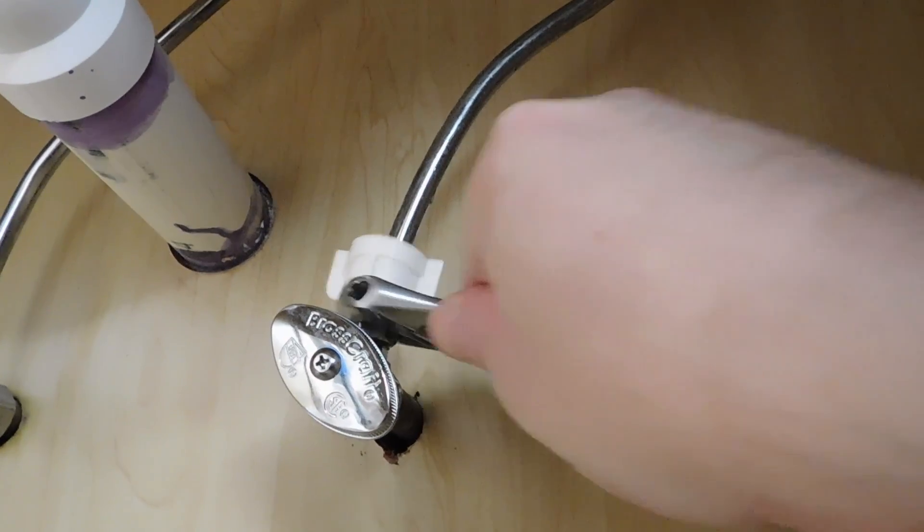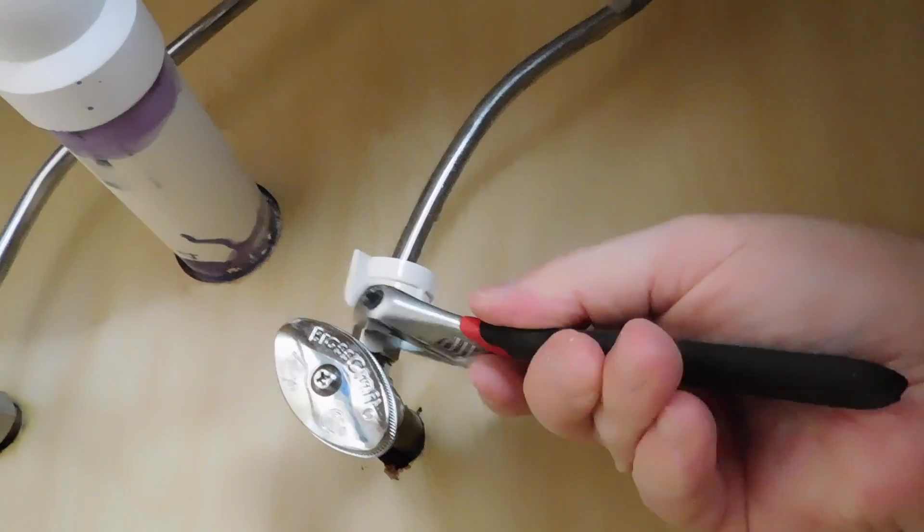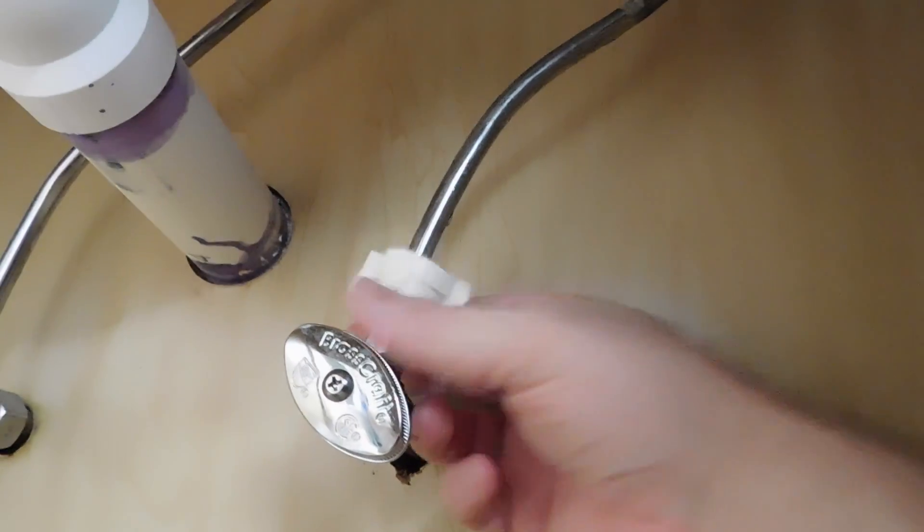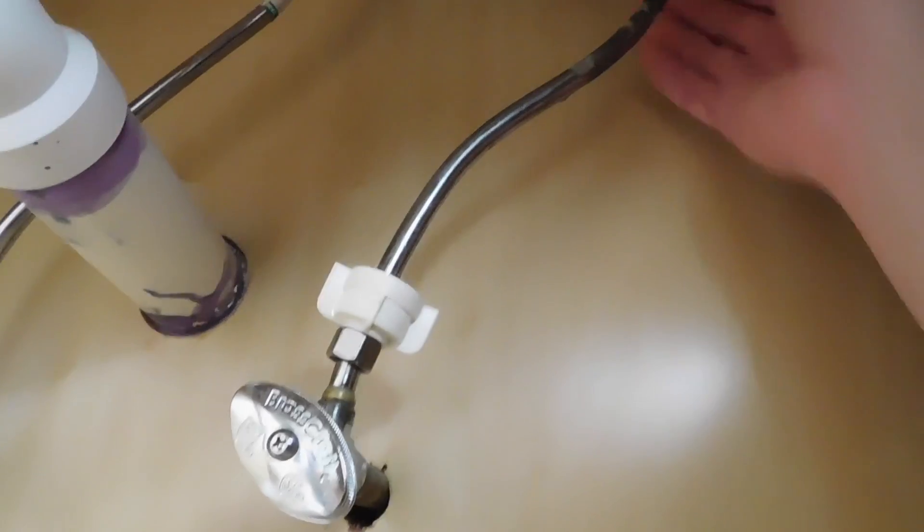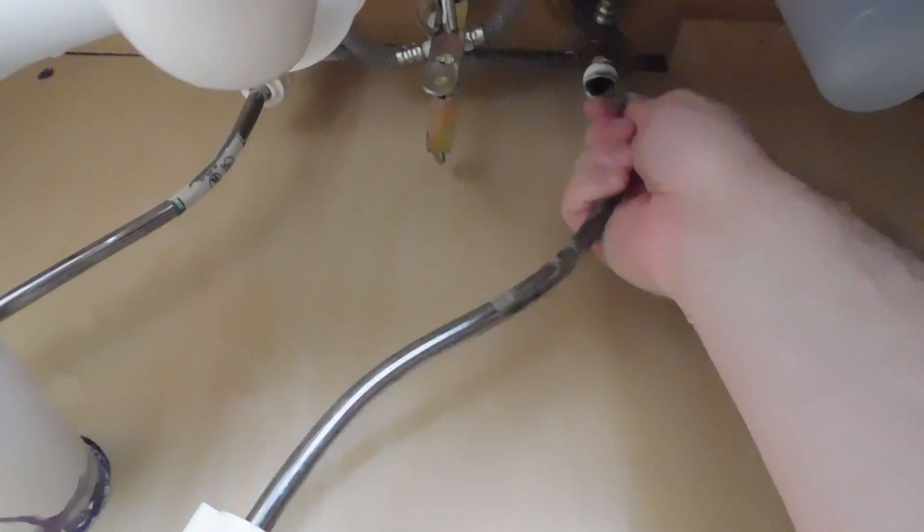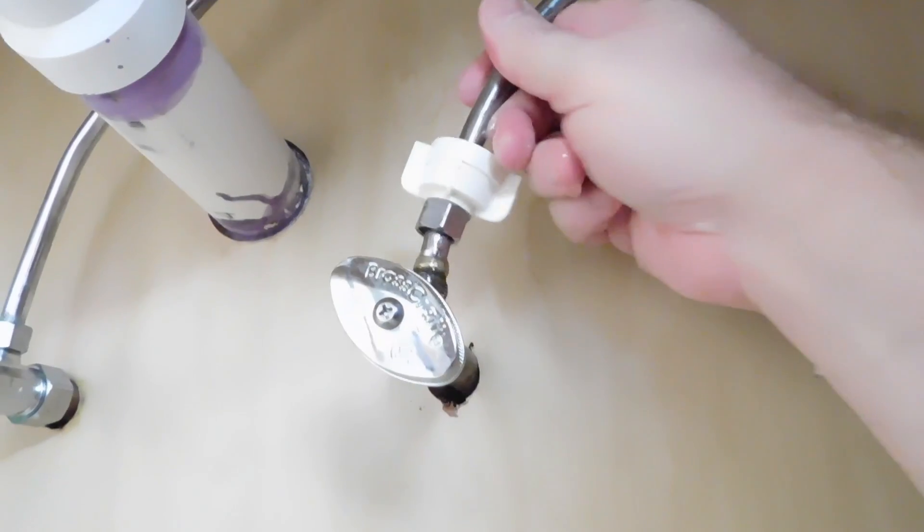I'll loosen the bottom supply line from the valve with a wrench, just enough so that I can continue to remove it with my fingers. Now I can remove the line. The water trapped in the line will escape.